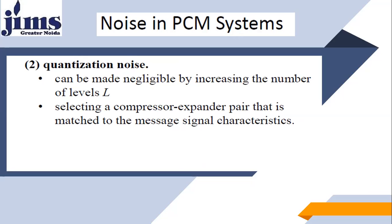If you take fewer levels, your step size is larger, which means more quantization error. So the two noise sources in a PCM system are: first, channel noise, and second, quantization noise.